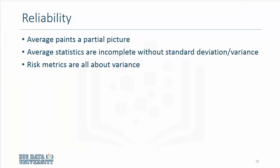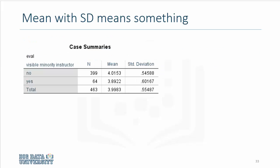So, the main argument in praise of standard deviation or variance is that average will, or the mean will paint a partial picture. If you really want to understand the complete picture for a variable or for your data set, you have to compute both the average and the standard deviation to understand the variance. And notice that all risk metrics in finance have much to do with standard deviation. So, a mean with a standard deviation means something more useful than the mean itself.